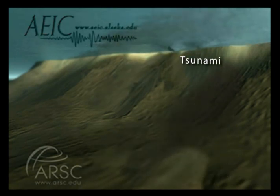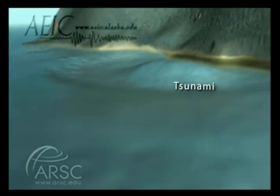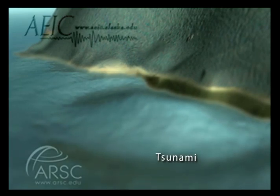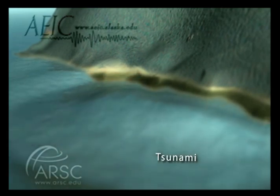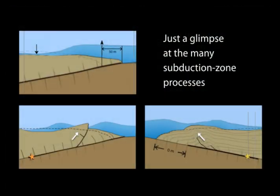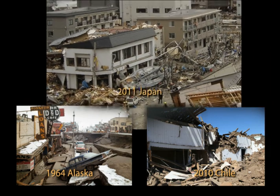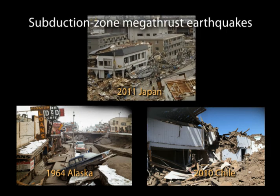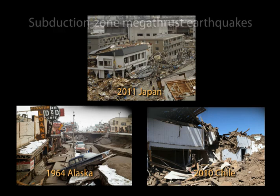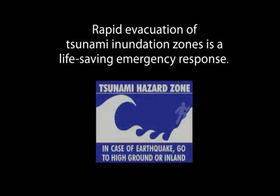This third type of tsunami took 77 lives. In these vulnerable locations, the usual drop, cover, and hold-on response to ground shaking must become: evacuate immediately from low ground, even during earthquake ground shaking. The tsunami-producing mechanisms illustrated here are still just a glimpse into the variety of subduction zone earthquake faulting and folding processes. The Alaska 1964, Chile 2010, and Japan 2011, as well as the catastrophic 2004 Sumatra subduction zone megathrust earthquakes, have delivered powerful lessons that rapid evacuation of tsunami inundation zones is a life-saving emergency response.